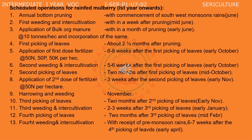After the second picking of leaves, application of the second dose of fertilizer at the rate of 50 kg nitrogen per hectare should be applied 3 weeks after the second picking, that is early November. Harrowing and weeding should be done in November. The third picking of leaves is 2 months after the second picking, that is early November. Third weeding and intercultivation should be done 2 to 3 weeks after the third picking, that is early January. The fourth picking of leaves is 2 months after the third picking, that is mid-February.